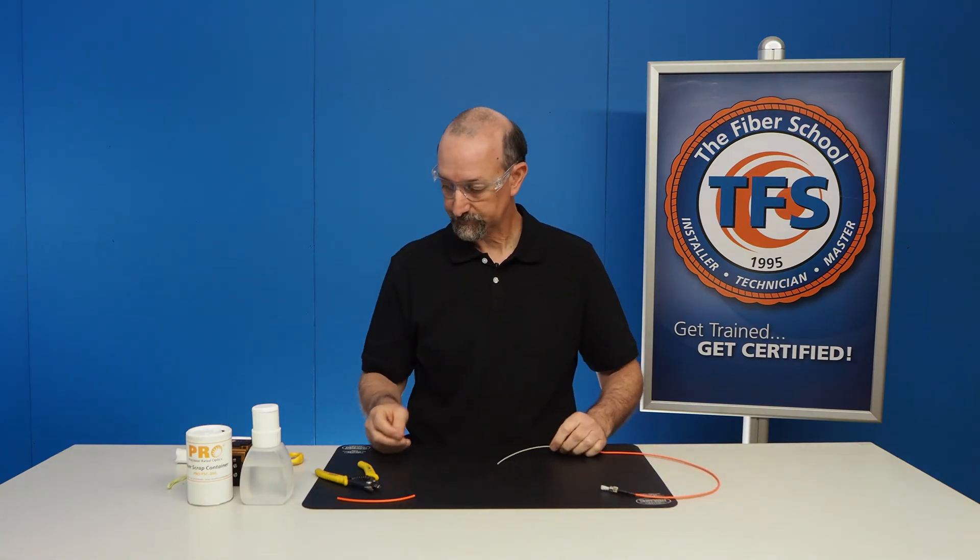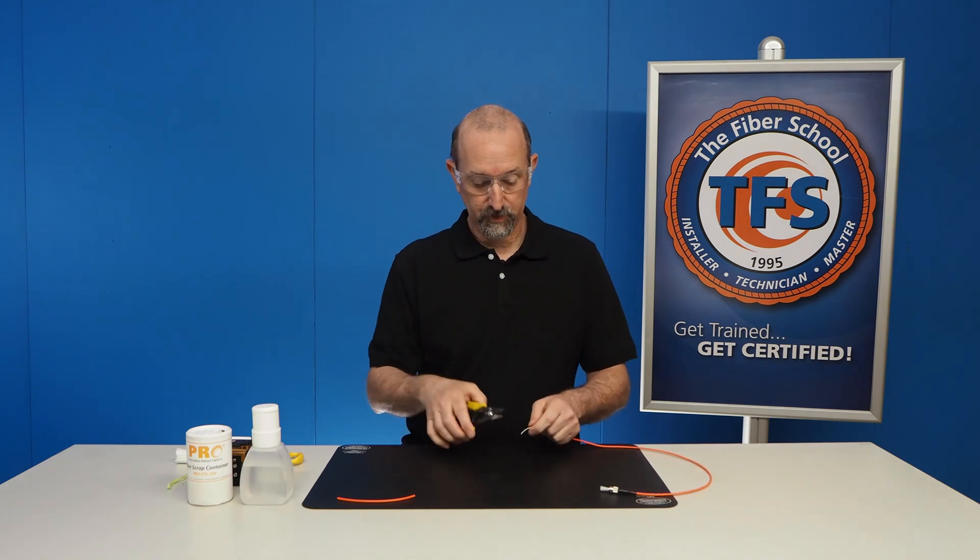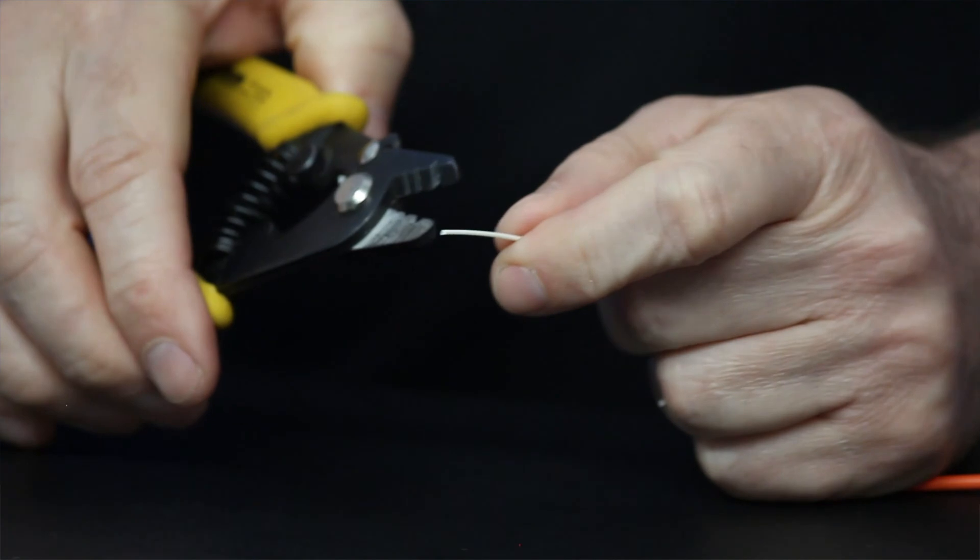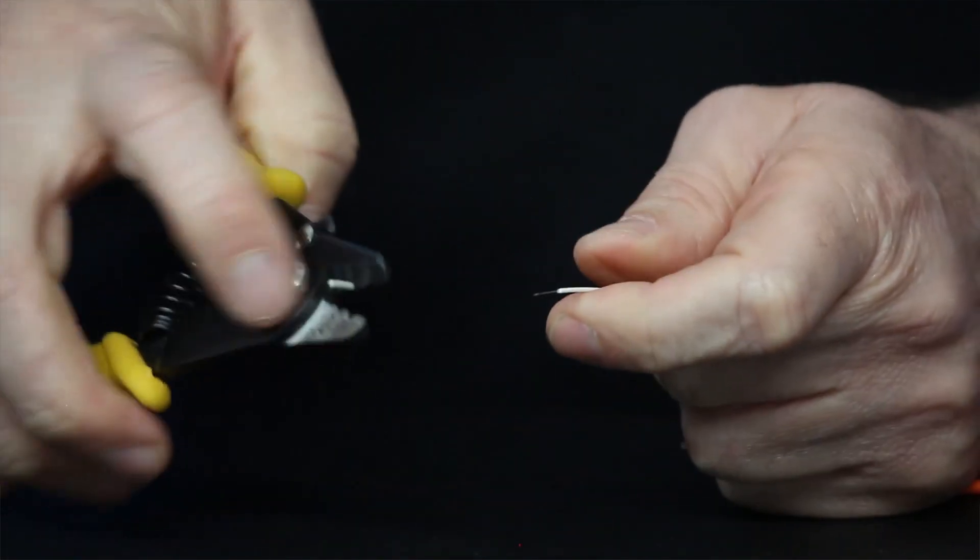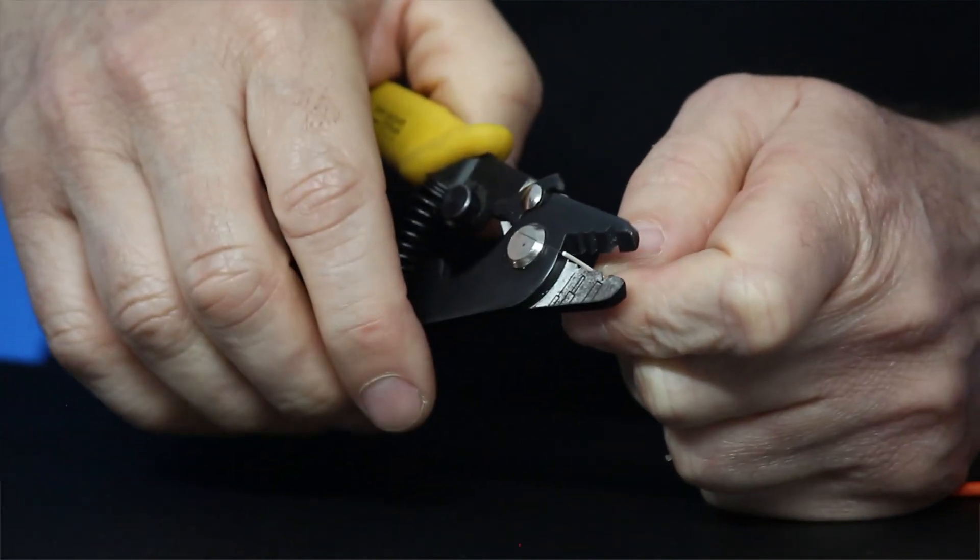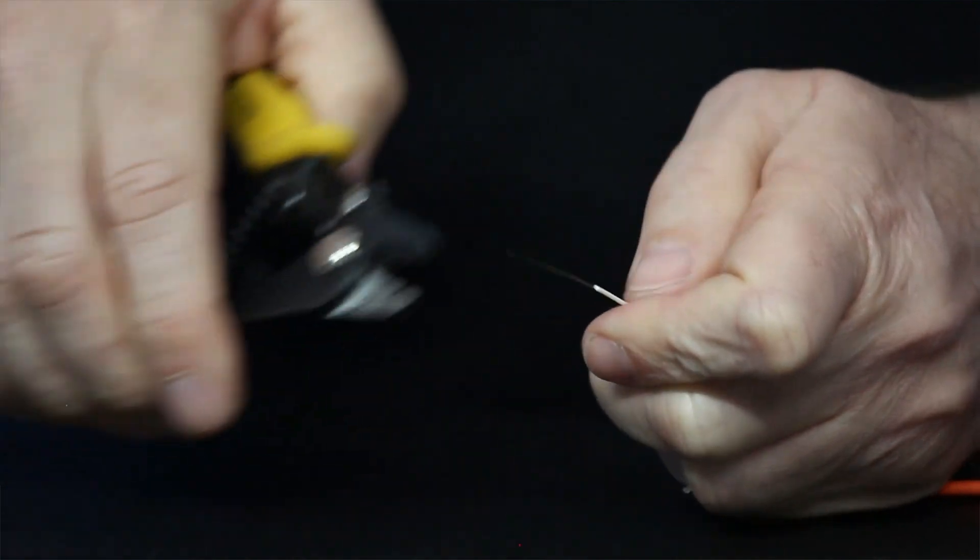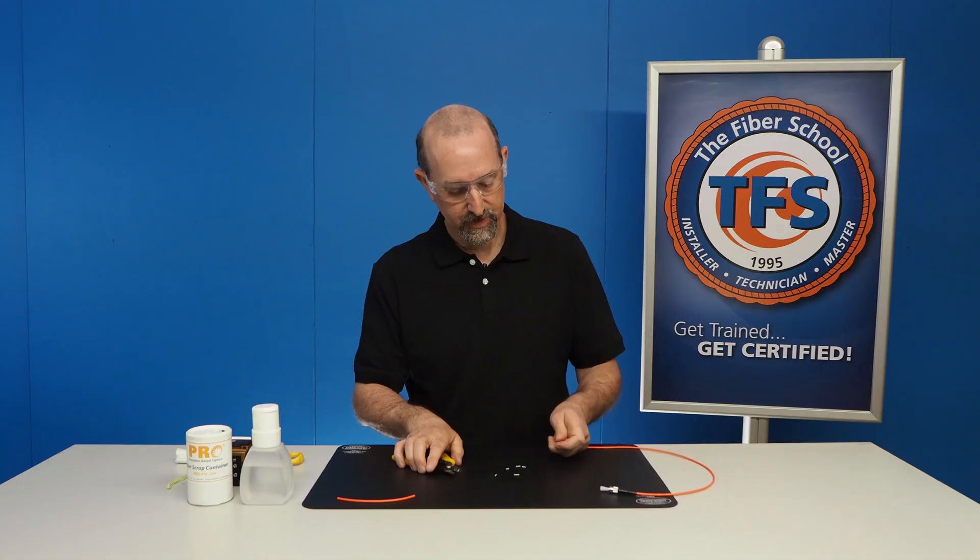Okay, so now we're ready. We're going to take our three-hole stripper and we're going to start stripping the 900 micron type buffer off. And again we do it in small nibbles. There we go. So you do about 30 or 40 millimeters. That's done.